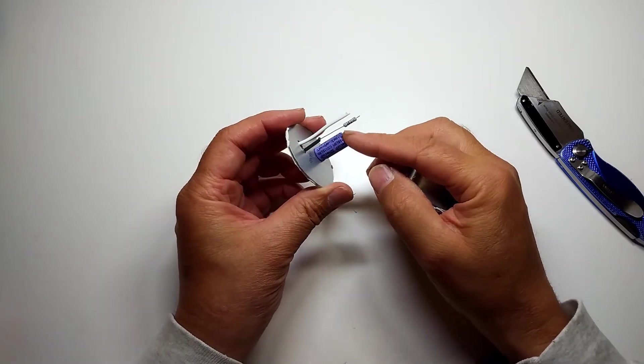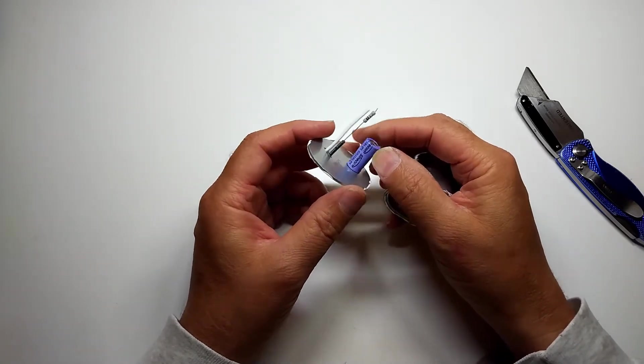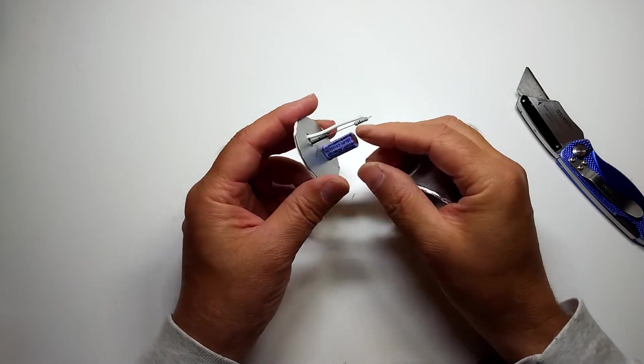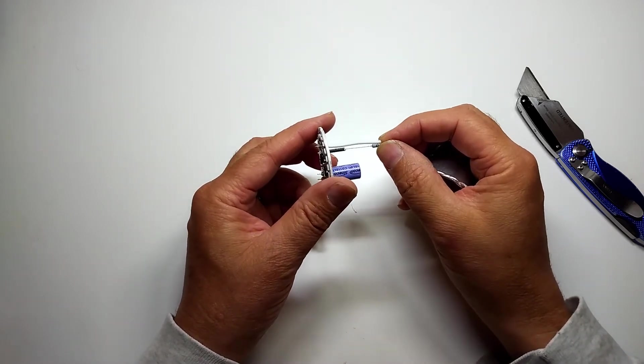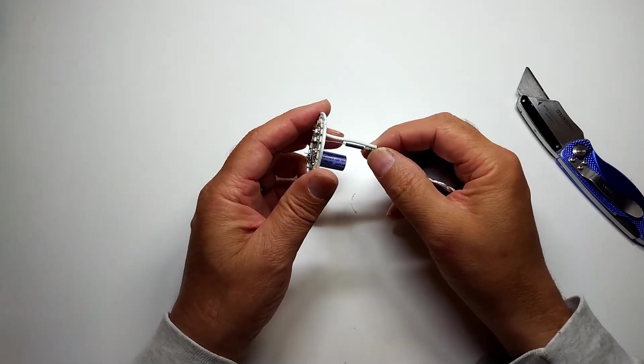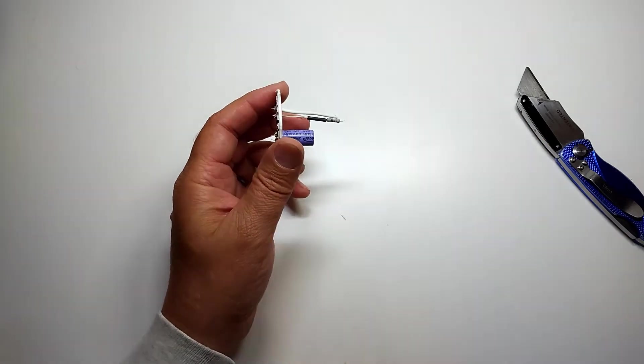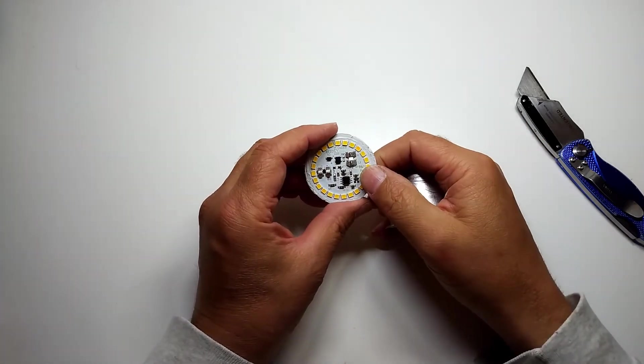On the back you can see there's a big capacitor that's used for reducing the ripple of the AC, and then they have a resistor which is a fuse and also limits the inrush current on the device.